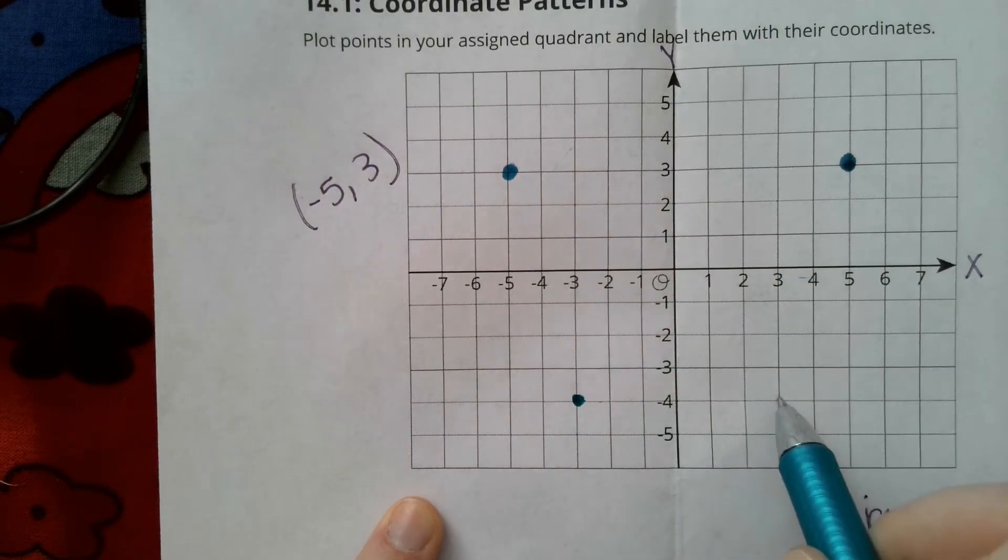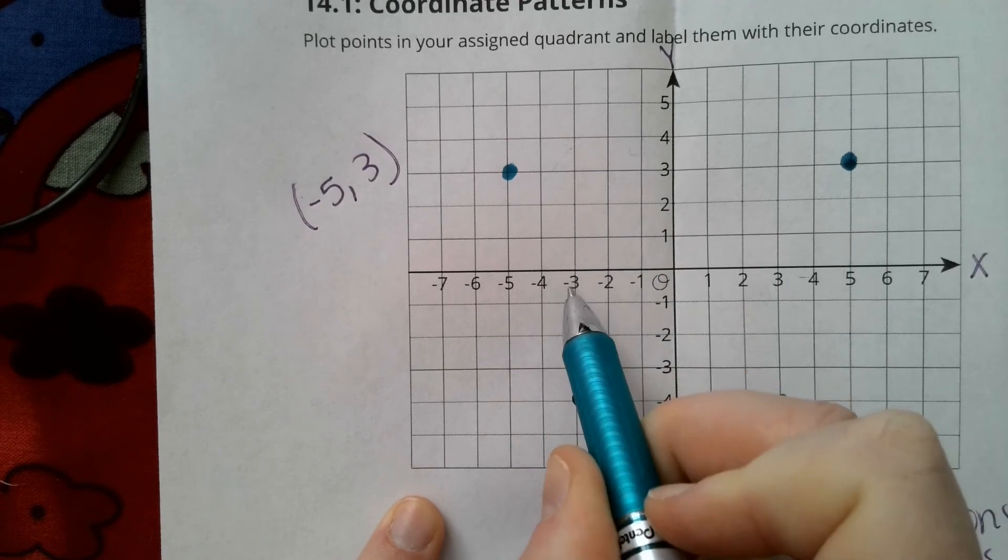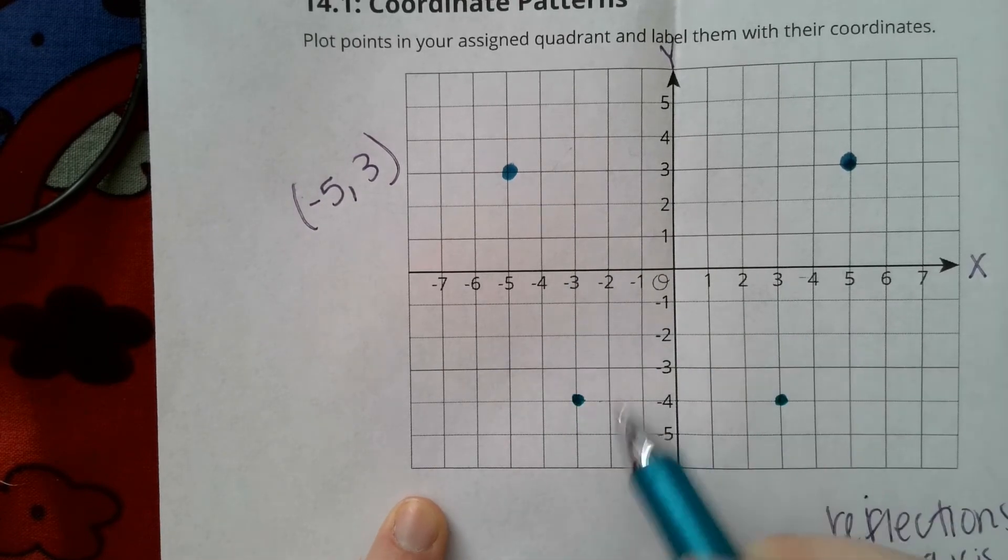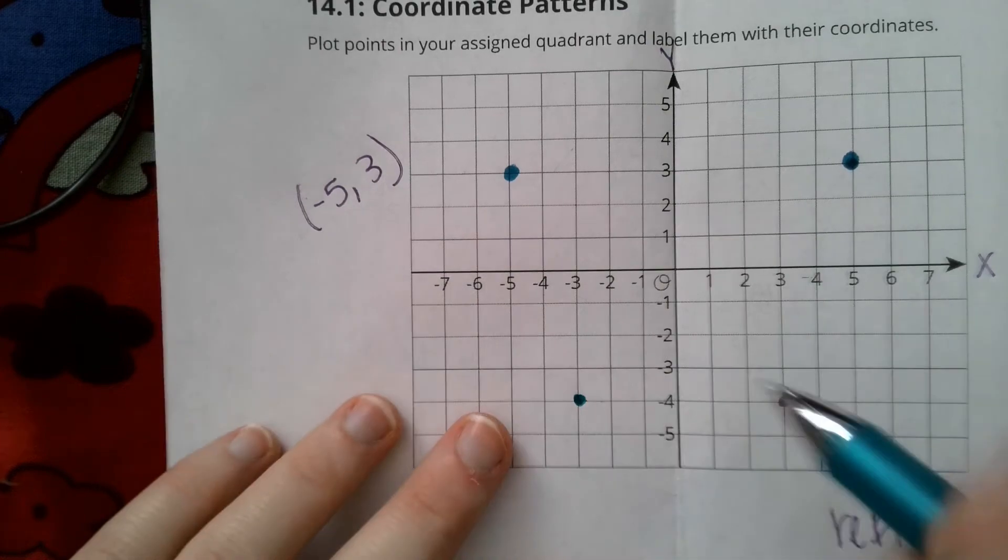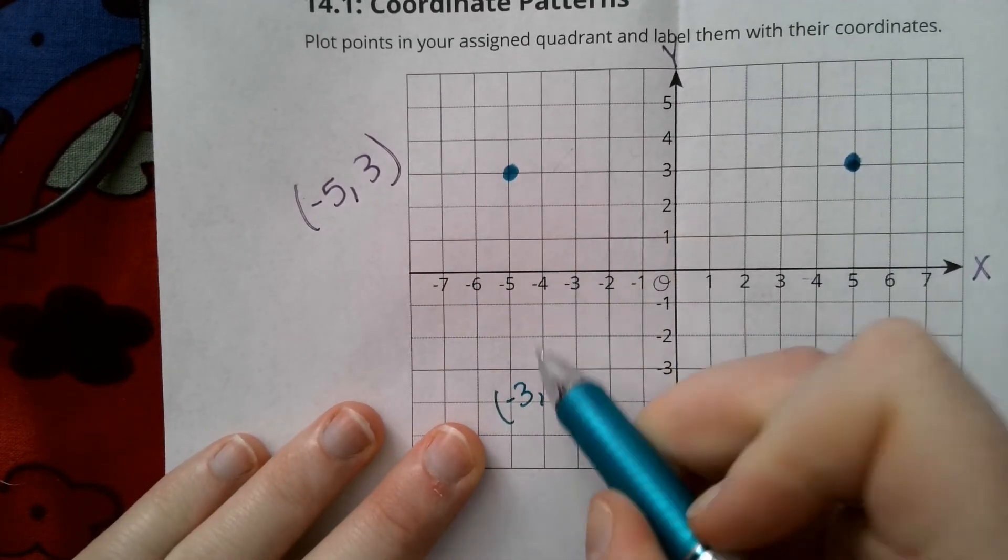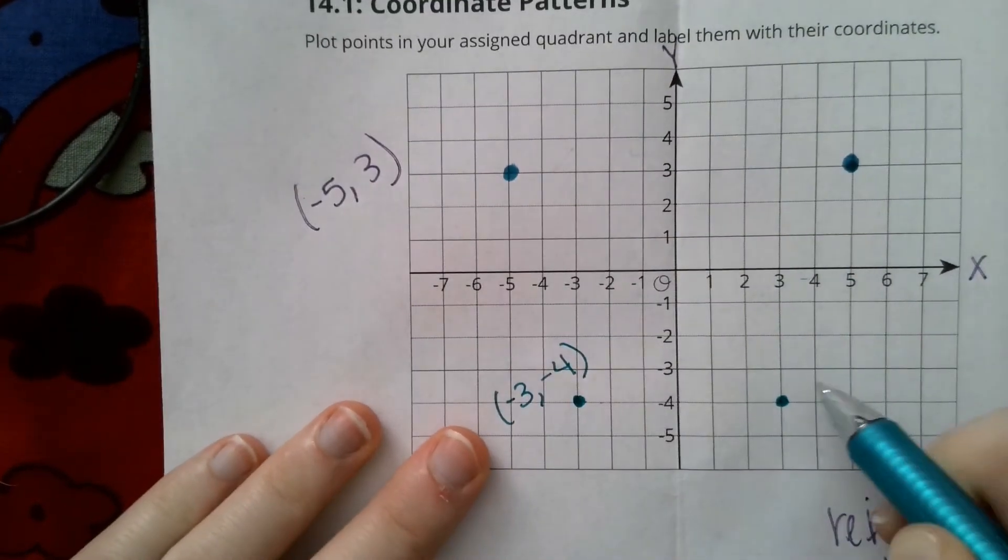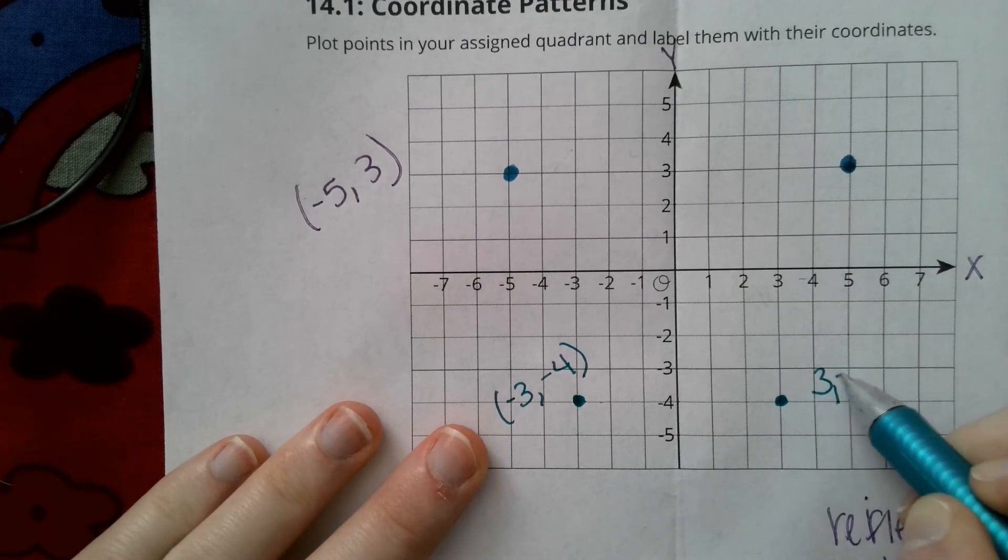So it's going to be 1, 2, 3 units. Negative 3 and 3, those are opposites. My y-coordinate is not changing. So I went from negative 3, negative 4 to 3, negative 4.